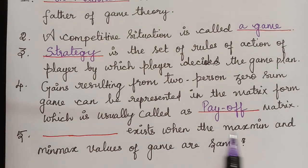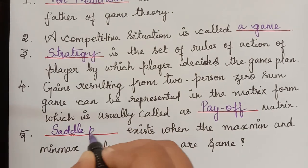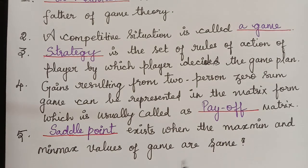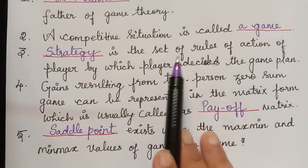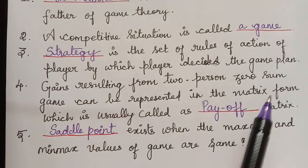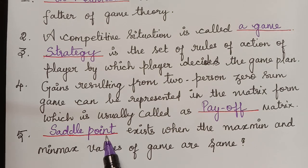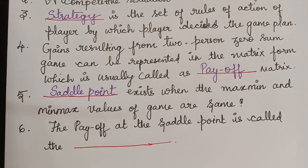The next question is: a saddle point exists when the maximin and minimax values of the game are the same. A saddle point of a payoff matrix is that position where the maximum of the row minimums coincides with the minimum of the column maxima.